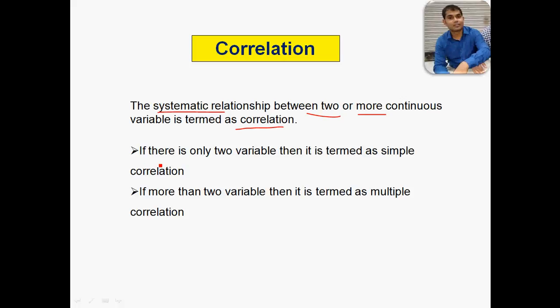If there are only two variables, for example X and Y, then it is termed as simple correlation. And if there are more than two variables, then it is termed as multiple correlation.